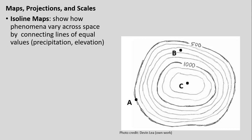Now that we've talked through the very basic parts of maps, I want to move to ISO line maps, one of the most common types of maps we frequently encounter. An ISO line map shows how a phenomenon varies across space by connecting lines of equal values of that phenomenon — whether it's precipitation, temperature, elevation, or anything that varies continuously across Earth's surface.